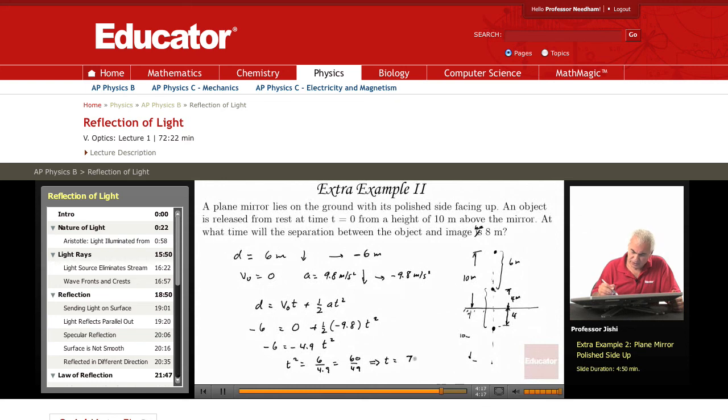Or 7.8. The square root of 49 is 7. So this is about 1.1 seconds, approximately.